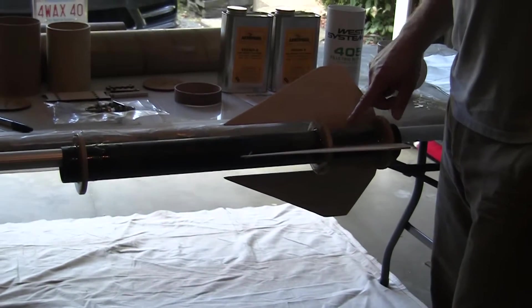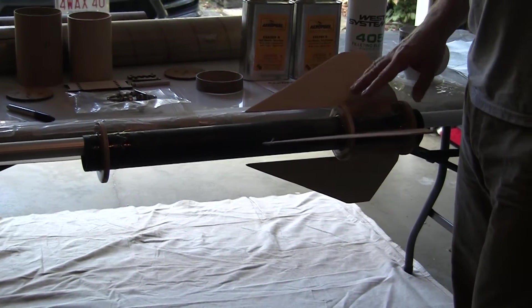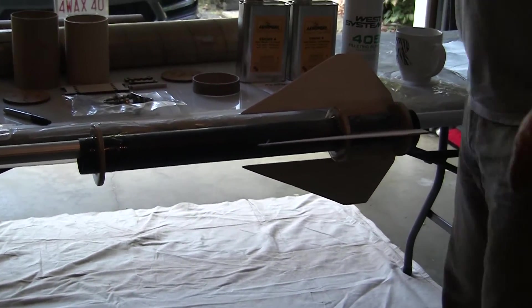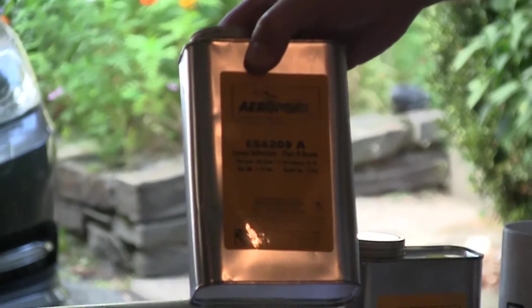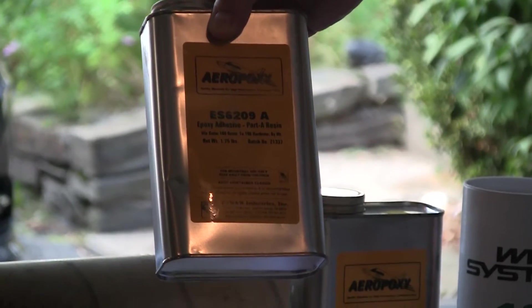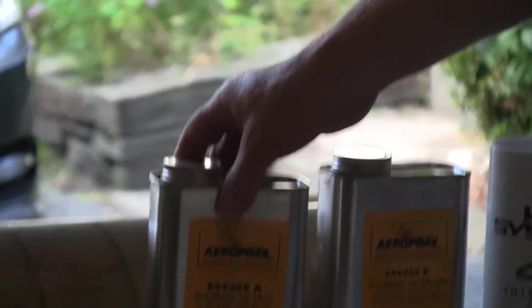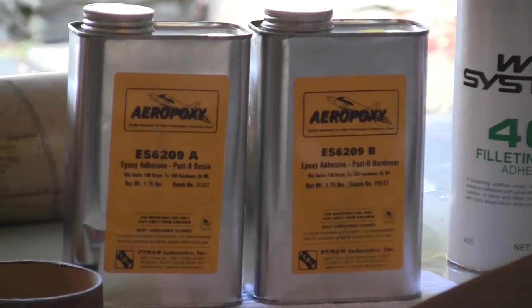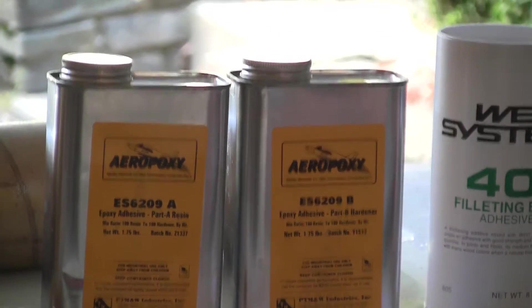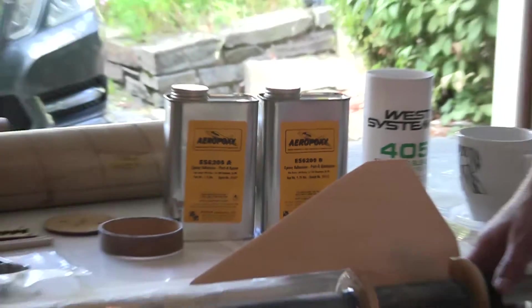What we did is we took last night and mixed up a thicker epoxy. By the way, the epoxy I may have said this earlier, but this is Aero Epoxy ES6209A. This is the actual resin, this is the hardener. You mix one-to-one, it's kind of a yellowish epoxy.